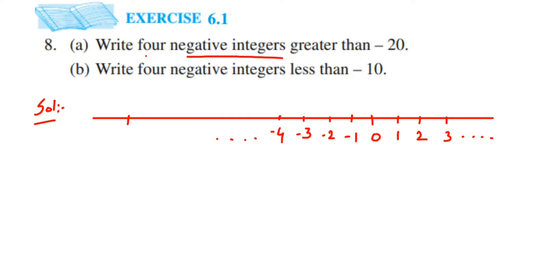As I mentioned, as we go towards the right-hand side the value of the number increases. For example, one is greater than zero, greater than minus one, minus two, and so on, because one is lying to the right. Similarly, three is greater than one because three is on the right-hand side of one. So any number lying on the right-hand side will be greater.